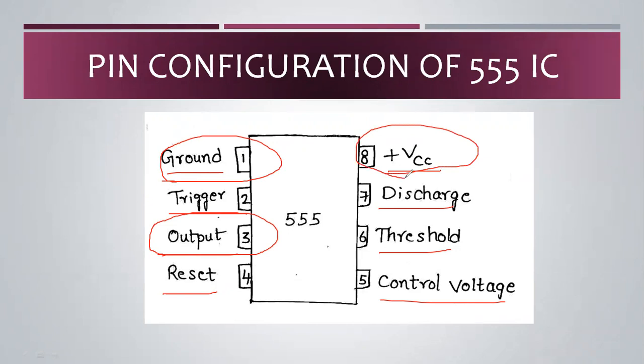This IC operates with a power supply of 5V to 18V. The remaining pins — trigger, discharge, threshold, and control voltage — handle different voltages relevant to the IC's operation.